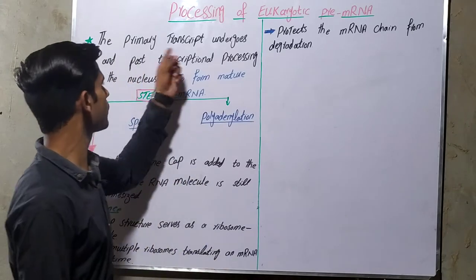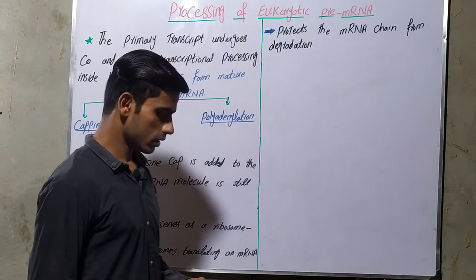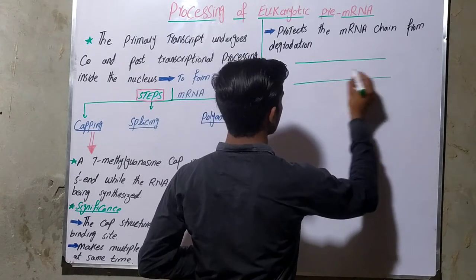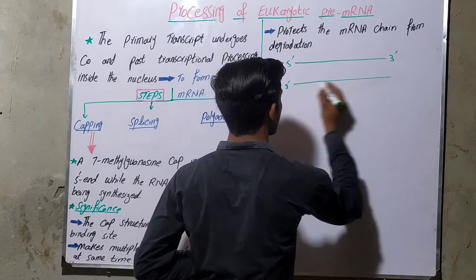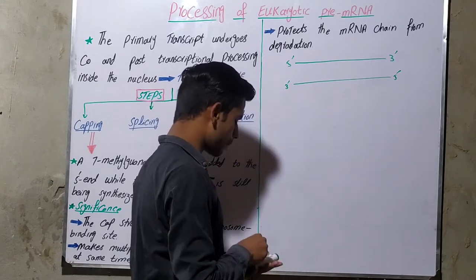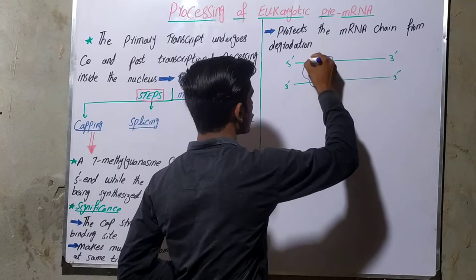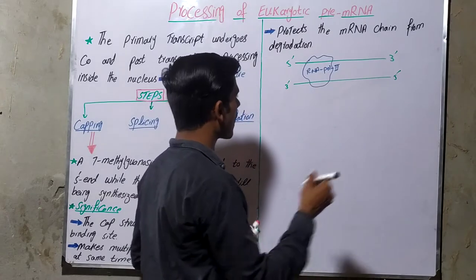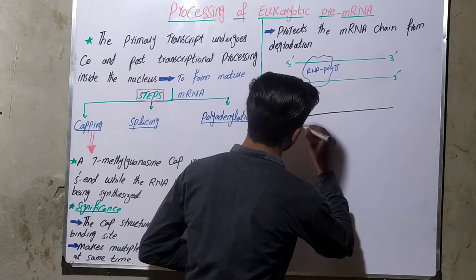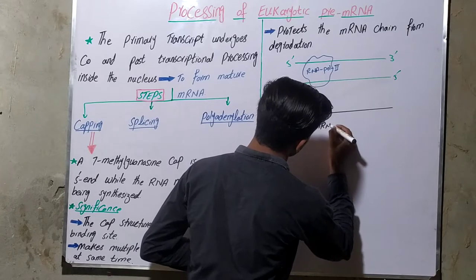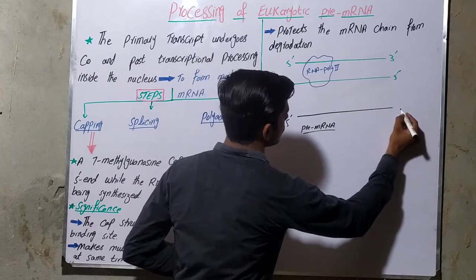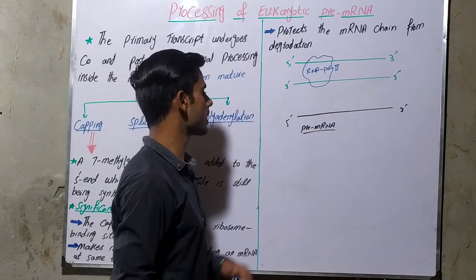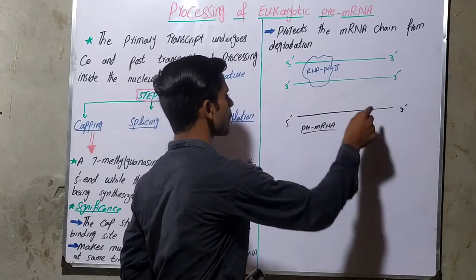I am going to revise a little bit. If we suppose that this is the DNA double-stranded molecule — one strand is from 5 prime to 3 prime, that is the coding strand, and another is from 3 prime to 5 prime, that is the template strand — then RNA polymerase 2 acts on the template strand and produces the new RNA, which is the pre-messenger RNA. The RNA polymerase 2 reads the template strand from 3 prime to 5 prime and synthesizes the pre-messenger RNA from 5 prime to 3 prime.